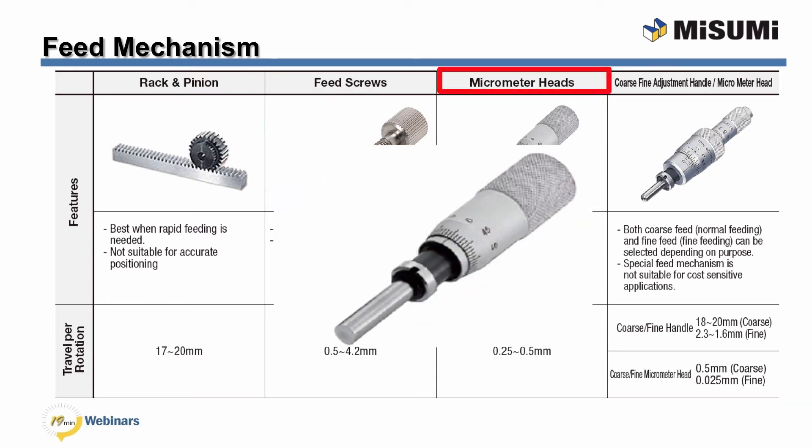Micrometer heads are utilized on our high precision stages. The micrometer head provides high resolution graduation of 0.01 millimeters, which is suitable for precision positioning. Misumi also offers a graduation notch of 5 microns. Travel per revolution on the micrometer heads is between 0.25 to 0.5 linear.